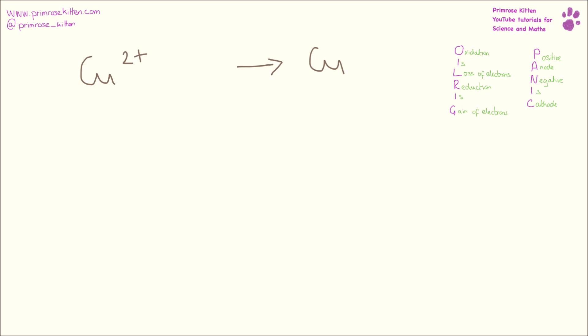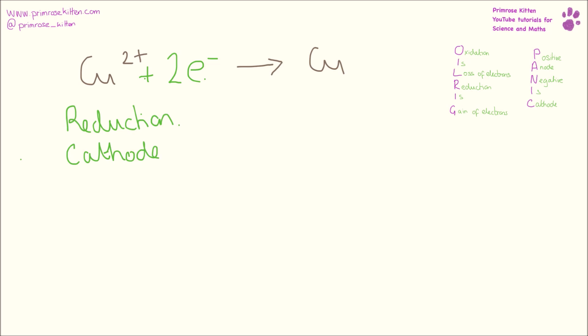Here we have copper two ions turning into copper. Our copper is balanced — we have one on each side — but we can see on the left side we have a two plus charge and on the right side we have a neutral charge. The only thing that is ever lost or gained is electrons, so we have to make the left side neutral by adding negative charges. Because it's two plus, we need to add two electrons to make it two minus overall. We have added electrons — that is gain of electrons, so this is reduction. Because we have positive ions, they are going to go towards the negative electrode, so this happens at the cathode.